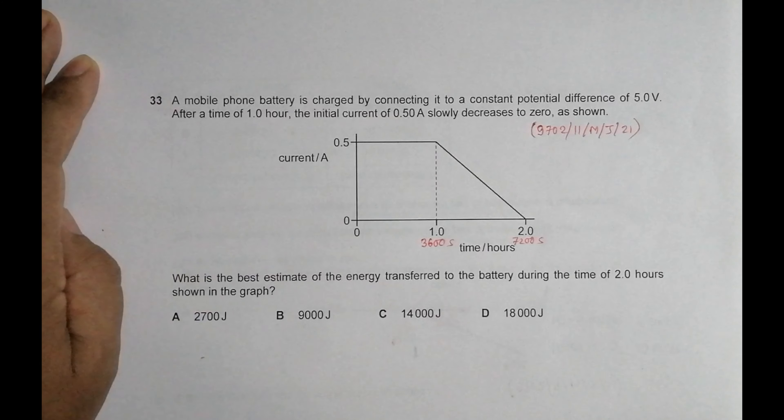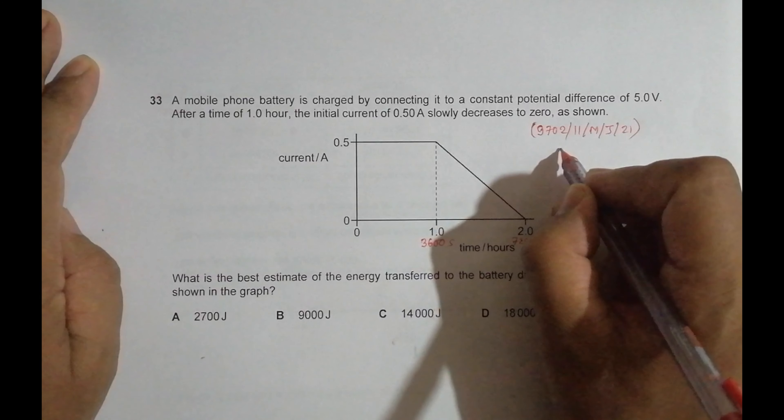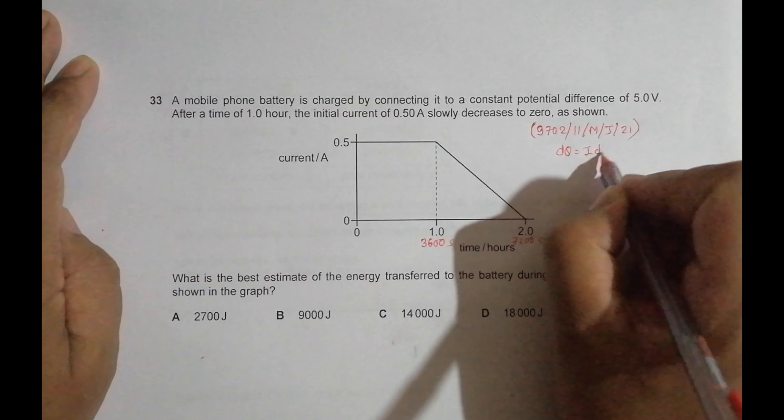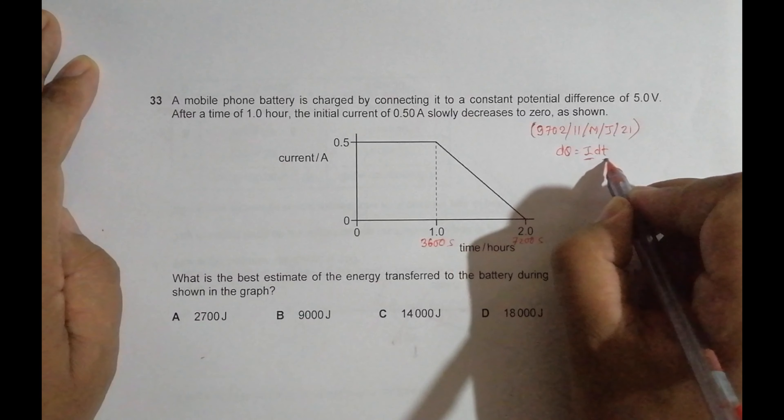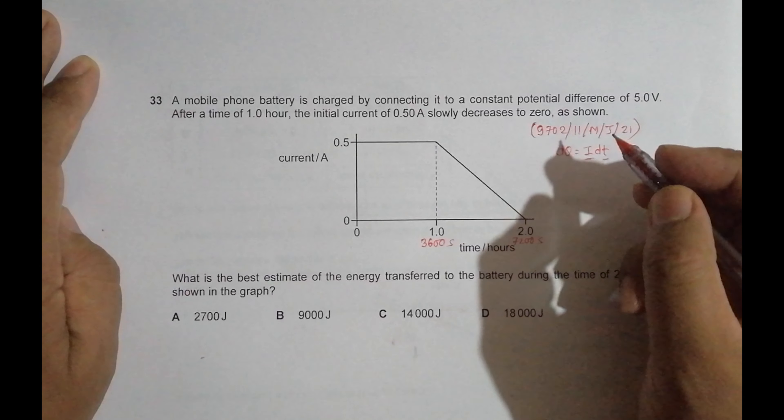Energy is equal to charge times voltage, so first we have to find the charge. Since we have the equation dQ = I × dt, if I draw a graph of current versus time, the area covered will give the charge delivered.